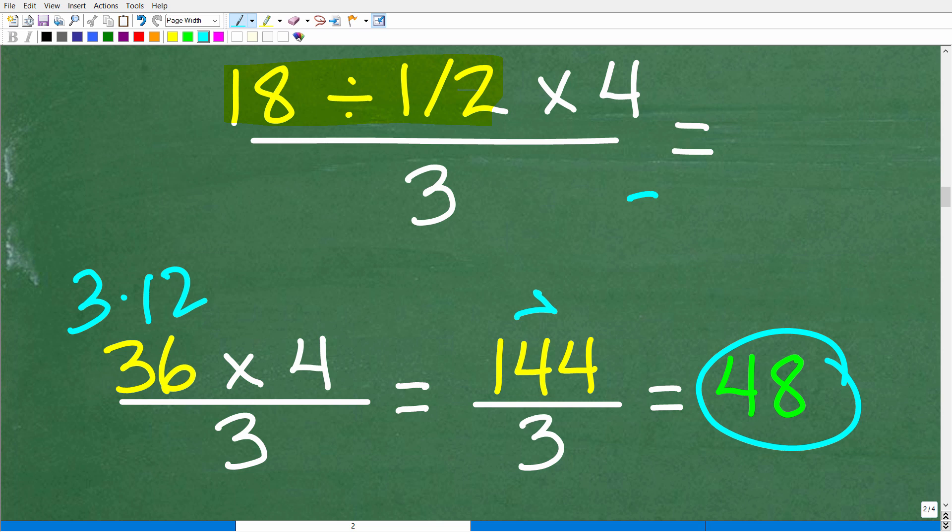So we're looking at the problem. 3 times 12 times 4 over 3. So all this here is multiplication, and you could cross-cancel like factors in a fraction, right? So this 3 here cross-cancels with this 3. So you end up with 12 times 4, which of course is 48.